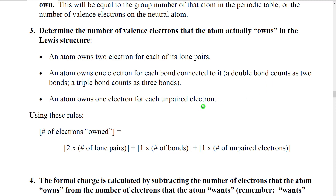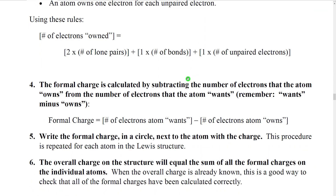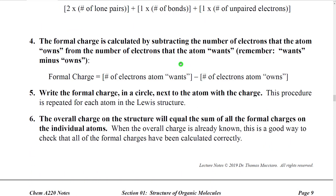There are also structures where atoms have an odd number of electrons and they have one unpaired electron — one electron by itself. So using that rule: two times the number of lone pairs, one times the number of bonds, one times the number of unpaired electrons — you're going to usually just count this out very quickly by referring to the atom. The formal charge is the difference between the number of electrons the atom wants, which we determine by asking how many valence electrons did it start with, minus the number of electrons the atom owns. Wants minus owns.